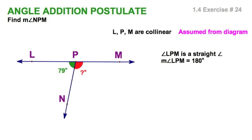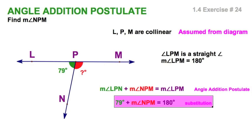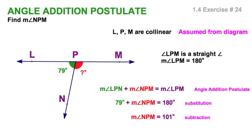So, let's just employ our angle addition postulate. The green angle and the red angle equals LPM. Substitute those values in there. 79, and the unknown are 180. And you can see right away that it's going to be 101 degrees.